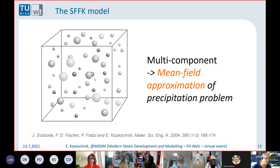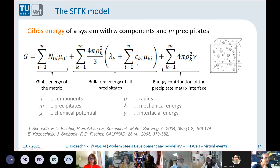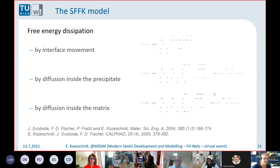We can describe the evolution of precipitate populations by the following approach. First, we write down the Gibbs energy of the precipitation system. There is one part from the energy of the matrix, one part related to the volume of the particles — chemical potentials — and one part related to the surface, the interface area between matrix and precipitate. There's a sum over all precipitates, and that is a relatively simple expression for the Gibbs energy.